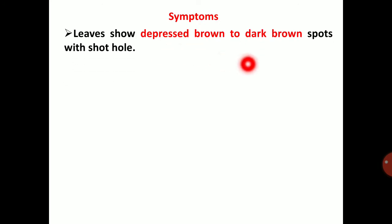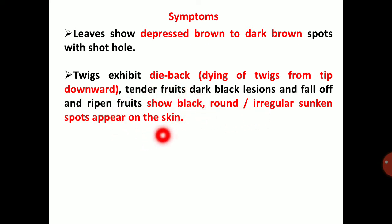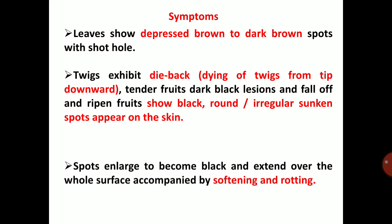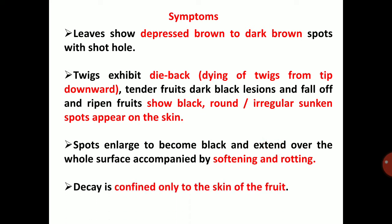Leaves show depressed brown to dark brown spots with a shot hole symptom. Twigs exhibit dieback — dying of twigs from tip downward. Tender fruits show dark black lesions and fall off, and ripened fruits show black, round, irregular sunken spots on the skin. Spots enlarge to become black and extend over the whole surface, accompanied by softening and rotting. Decay is confined only to the skin of the fruit.